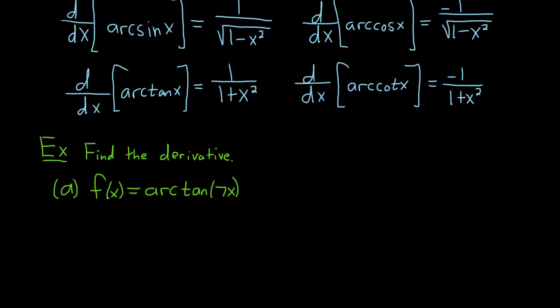All we have to do is use the formula. f'(x): the derivative of arc tan is 1 over 1 plus x². Here it's 7x, so it'll be 1 over 1 plus (7x)² times the derivative of the inside function. We have to use the chain rule. The derivative of 7x is 7. It's 1 over 1 plus x², this whole thing here is your x, then you multiply by the derivative of the inside.